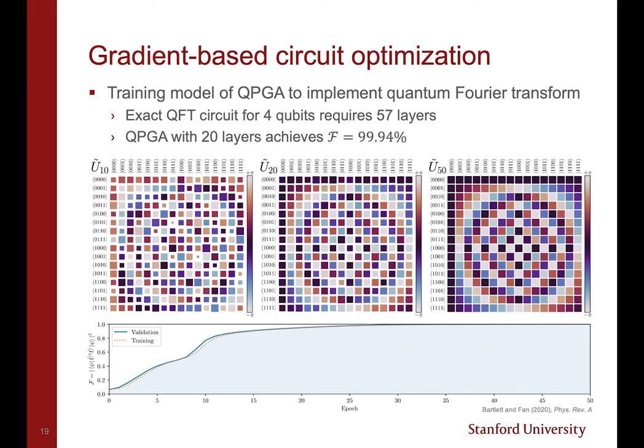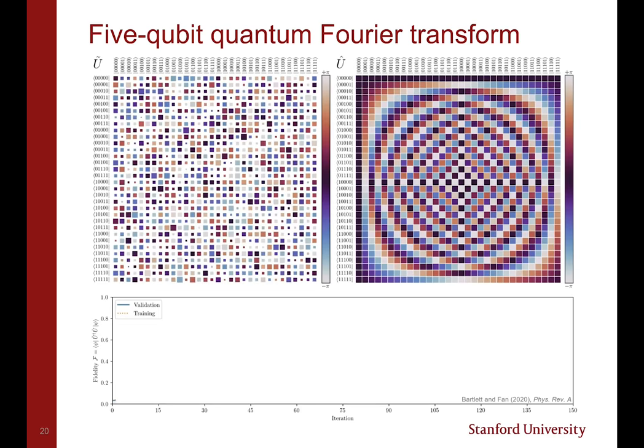The figure shown here depicts the operator implemented by the simulated device at various points in training, as well as the fidelity over the course of the optimization. The size of each square represents the magnitude of each of the matrix elements of the implemented operator, while the phase is denoted by the hue. The operator starts off randomly initialized with very little structure, but it rapidly converges over 50 iterations to an operator which is visually indistinguishable from the target operator.